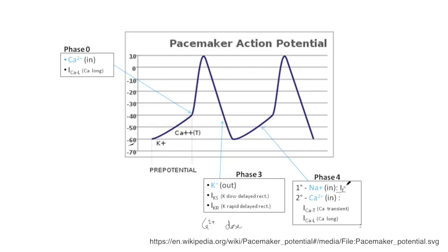One thing that's often mentioned about funny current channels but never really explained is what they do. Simply put, they help maintain automaticity of the heart rhythm by allowing an inherent leakiness of sodium ions to push the membrane potential from its resting point at minus 75 millivolts up to the action potential threshold.